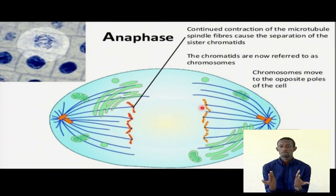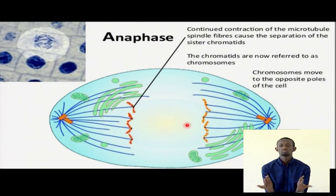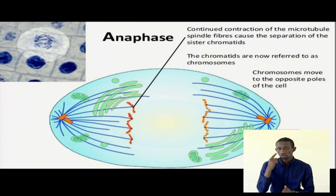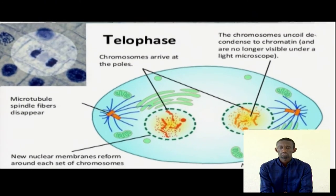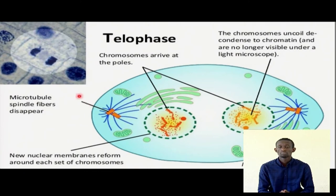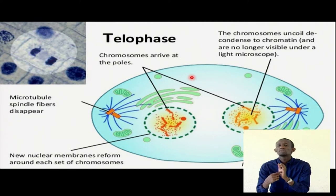Look — this was initially here, and this was initially here, and that initially there, and that initially there. Now they are separate. Remember, this is our DNA content, this is our nuclear content. And towards the end, which we refer to as telophase, the photomicrograph zoomed in is giving us a fair representation here in our simple drawing.